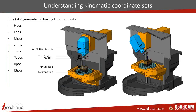You saw this picture in the previous slides. Taking a head-table machine as an example: we have the submachine at the bottom of the table, a fixture, and the part defined in our machine setup. This is our MAC position. We have the tool tip coordinate, tool station, and target coordinate system. All of those coordinates are very important for controlling the machine, and for controlling each of these points we generate the following kinematic sets.